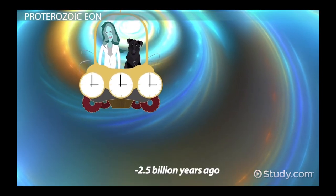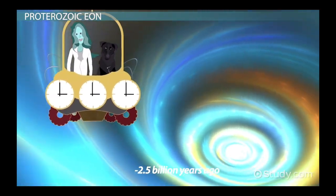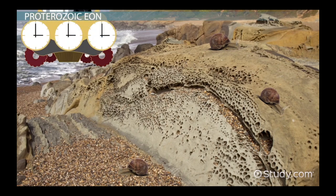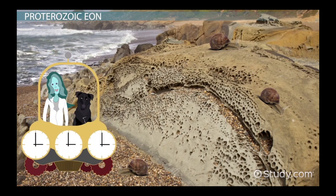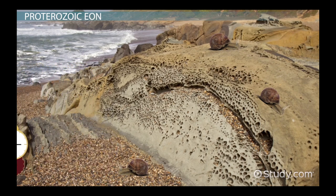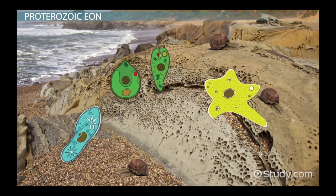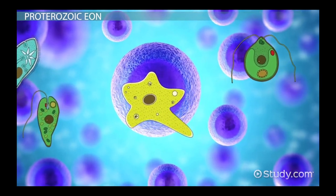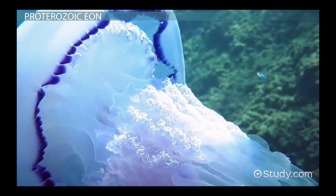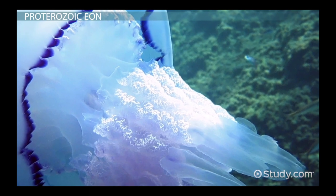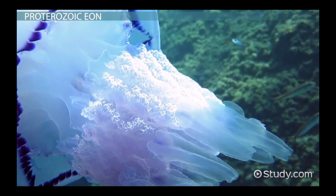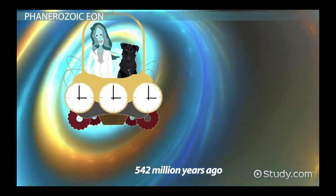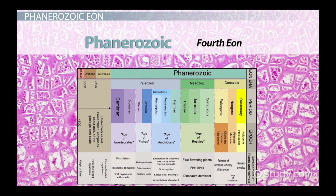The third eon is the Proterozoic, starting about 2.5 billion years ago and ending roughly 542 million years ago. The concentration of atmospheric oxygen increased, and eukaryotic cells appeared — cells that have a nucleus and organelles contained within membranes, the cells that make up our own body. It is during this eon that algae and soft-bodied invertebrate animals appear on earth. The fourth and present eon is the Phanerozoic, starting roughly 542 million years ago.